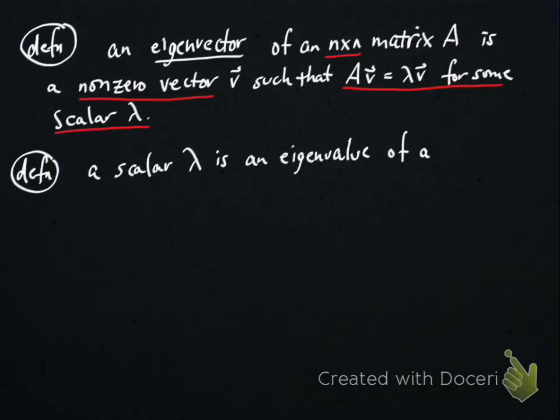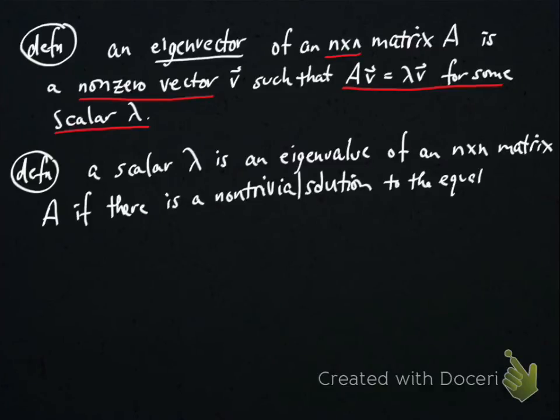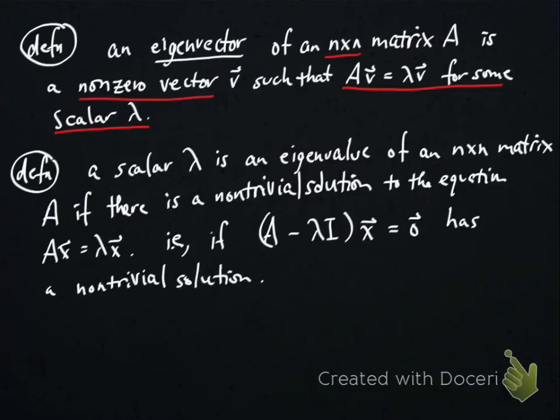Now, an eigenvalue, a scalar lambda is called an eigenvalue of an n by n matrix A if there's a non-trivial solution to the equation AX equals lambda X, i.e. A minus lambda times the identity times X equals 0 has a non-trivial solution. And again, some things to notice. This is only defined for square matrices and it's just asking about the existence of non-trivial solutions to some equation.